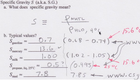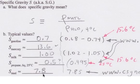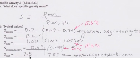So typical values, specific gravity of gasoline is 0.7, mercury 13.6, milk is about 1 because it's mostly water, propane I estimated 0.5, and steel 7.8.